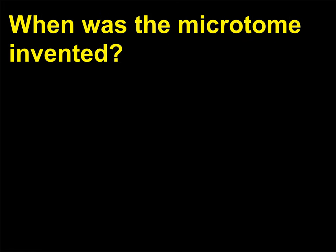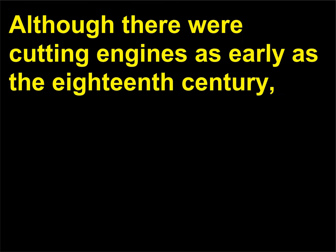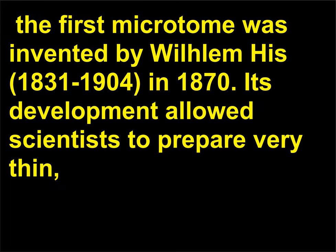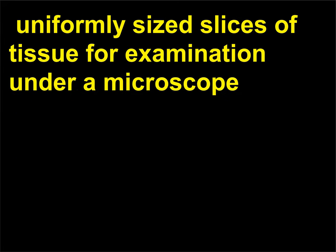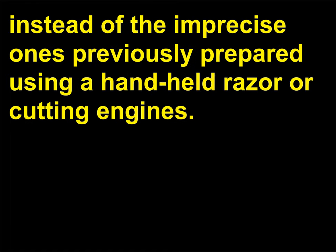When was the microtome invented? Although there were cutting engines as early as the 18th century, the first microtome was invented by Wilhelm His (1831–1904) in 1870. Its development allowed scientists to prepare very thin, uniformly sized slices of tissue for examination under a microscope, instead of the imprecise ones previously prepared using a handheld razor or cutting engines.